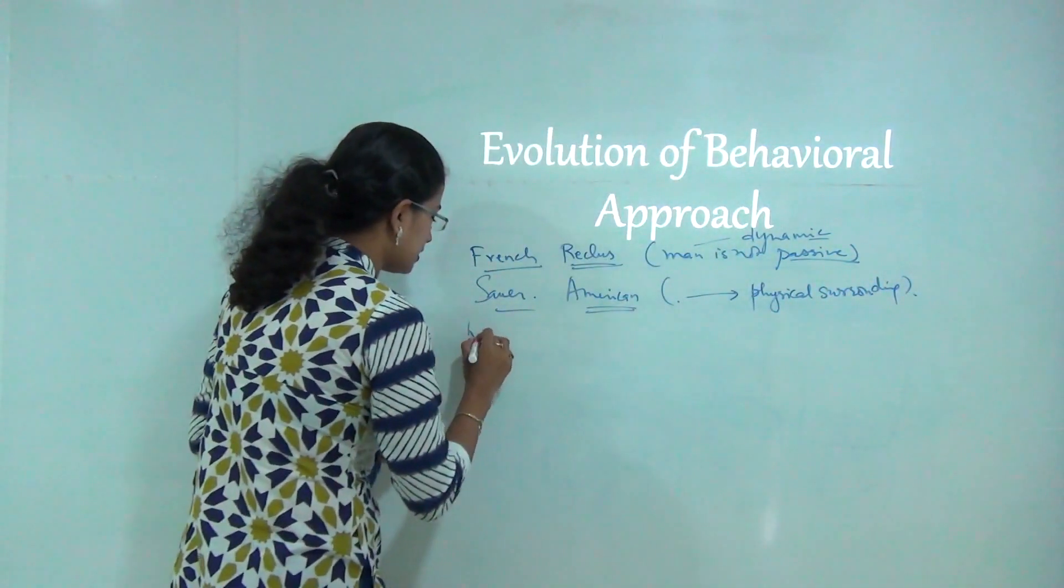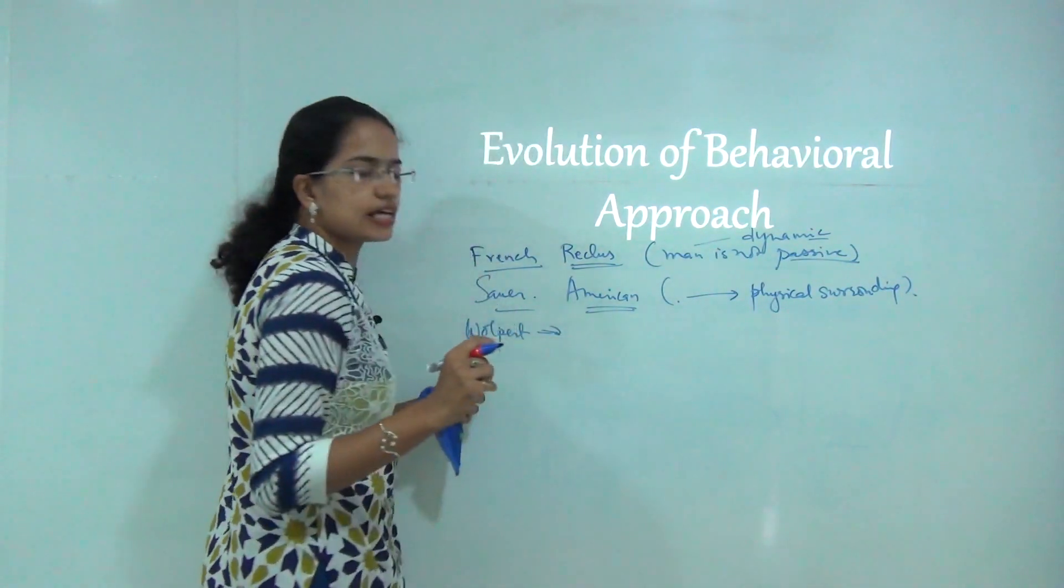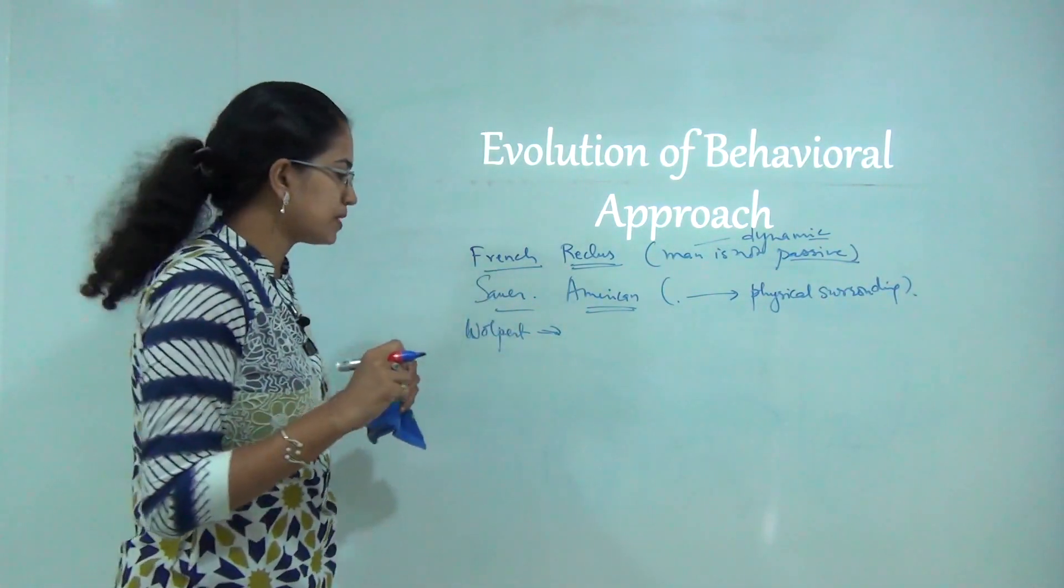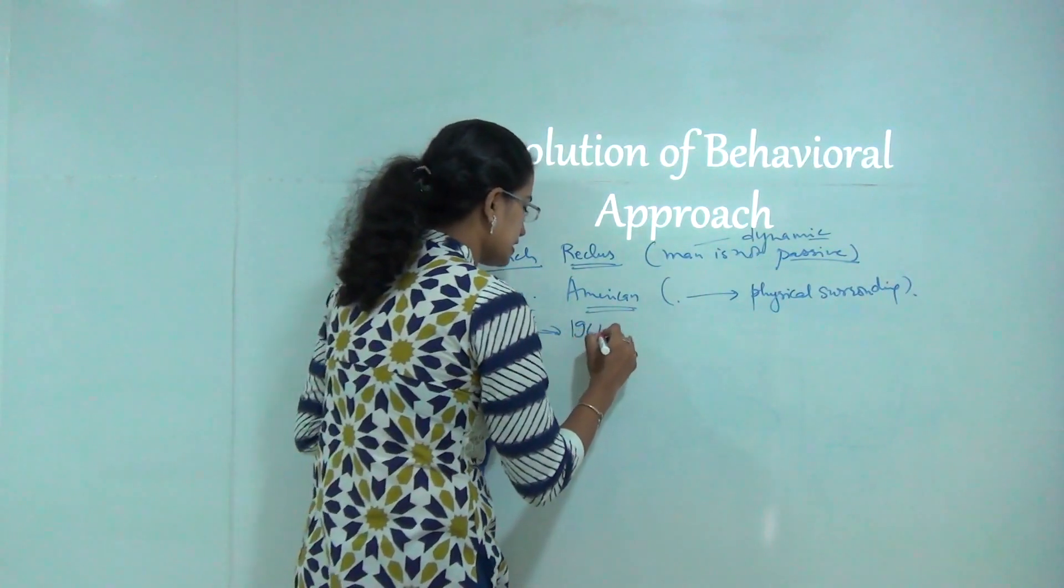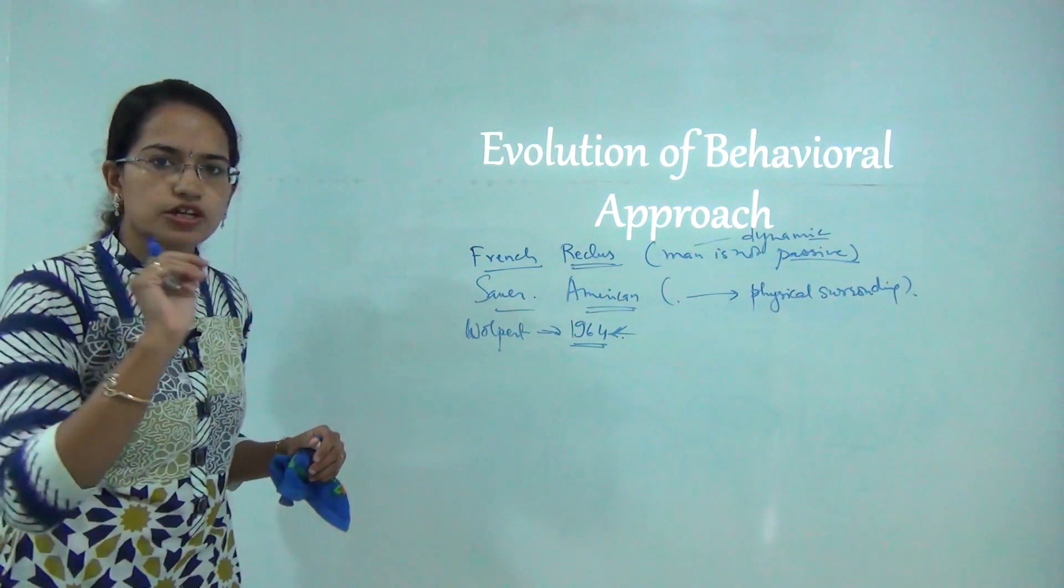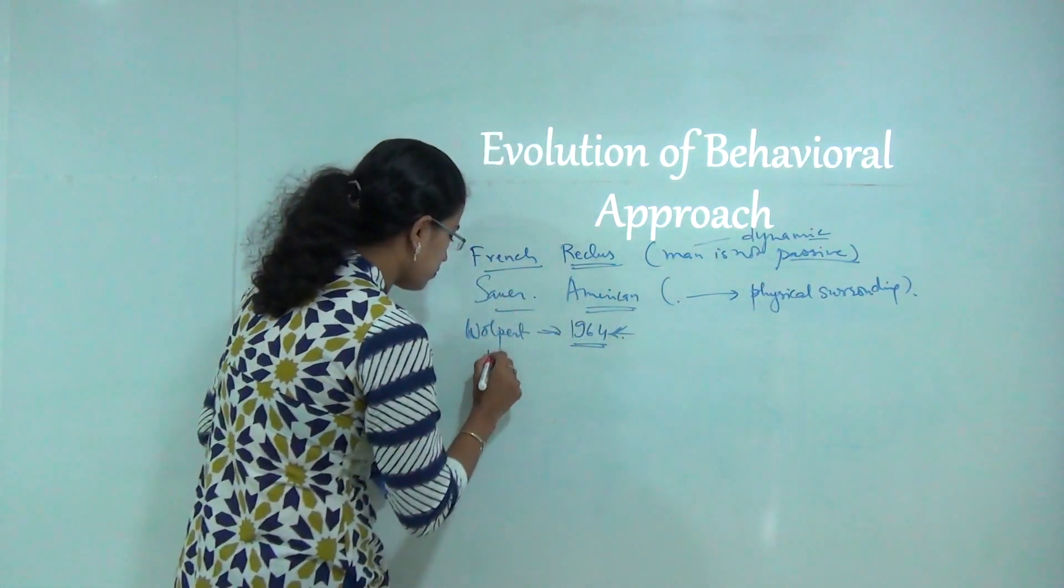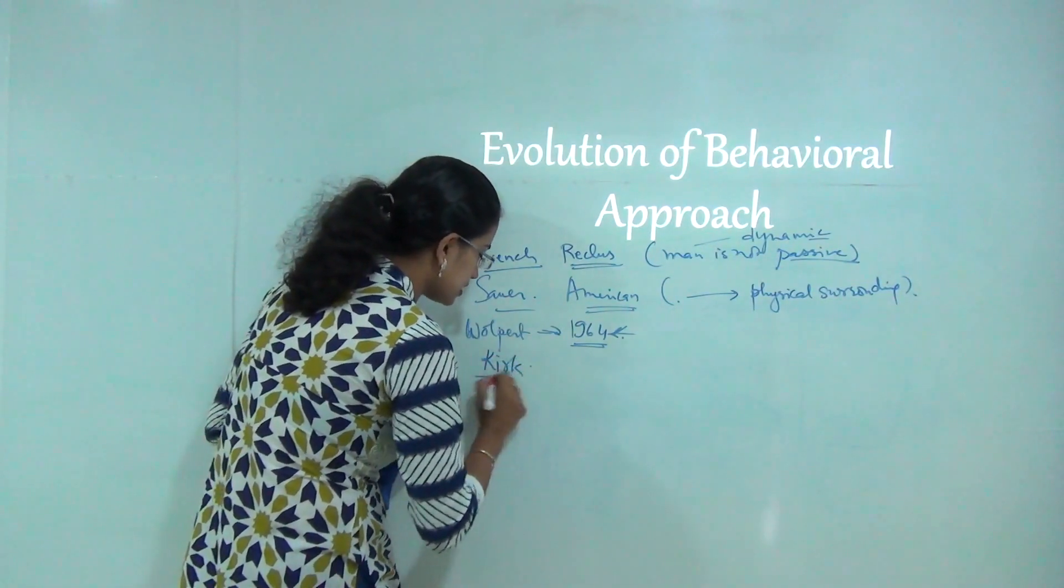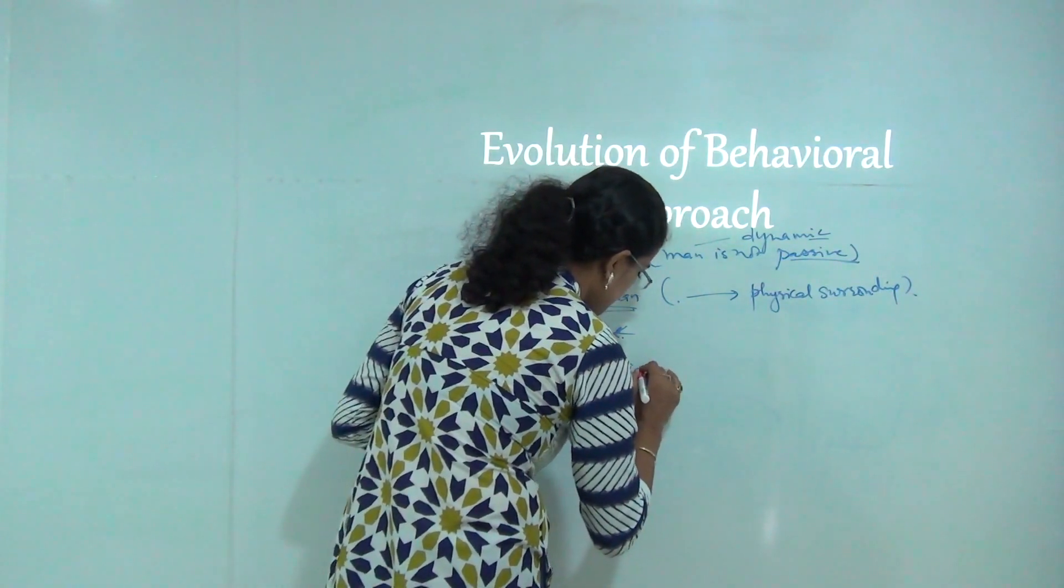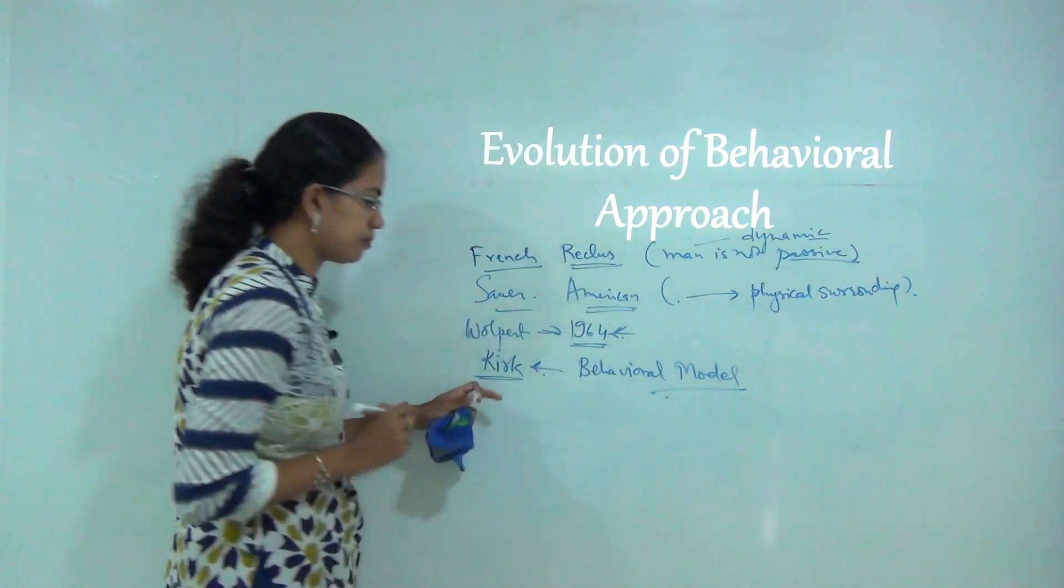Then came Wolpert that we already talked about. He criticized the concept of economic man and the aim of profit maximization. In 1964 he did a case study on farmers and said farmers are not optimizers but satisfiers. Then there was Crick, who was considered the first person who gave out a behavioral model. He came out with the idea that with the same information there can be different meanings derived for the same set.